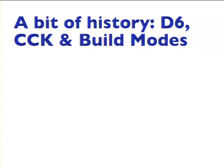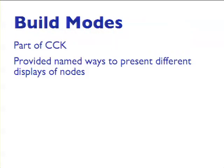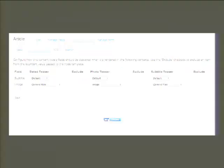A little bit of history to show why we're where we are now. How many people worked in D6? And pretty much everyone used CCK in D6. Did anybody remember hearing about build modes in CCK 6? Build modes were part of CCK — they were named ways to present different displays of nodes in different contexts. If you managed to enable the UI, it gave you the fields you'd defined in CCK and stacked up the build modes you had defined.